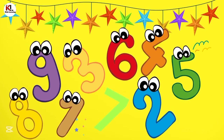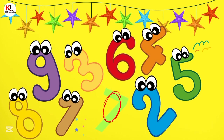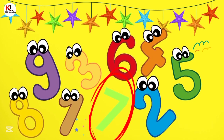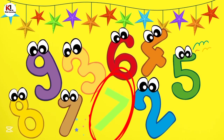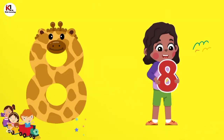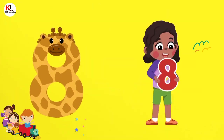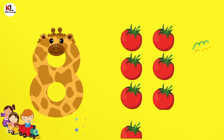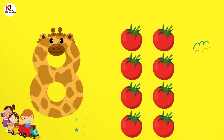Now can you find number 7? Come on friends, I know you can. Yes, you are doing so well! This is number 7. Number 8 — eight tomatoes. One tomato, two tomatoes, three tomatoes, four tomatoes, five tomatoes, six tomatoes, seven tomatoes, eight tomatoes.